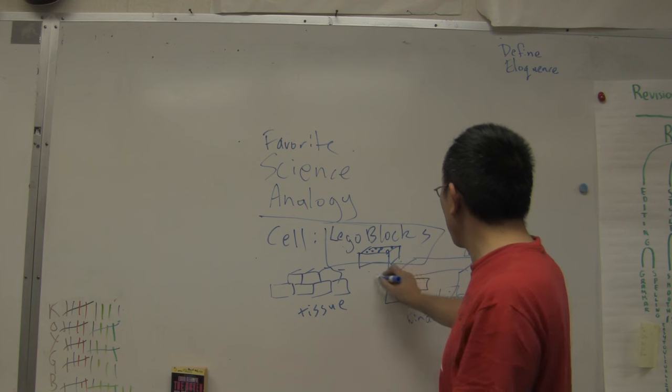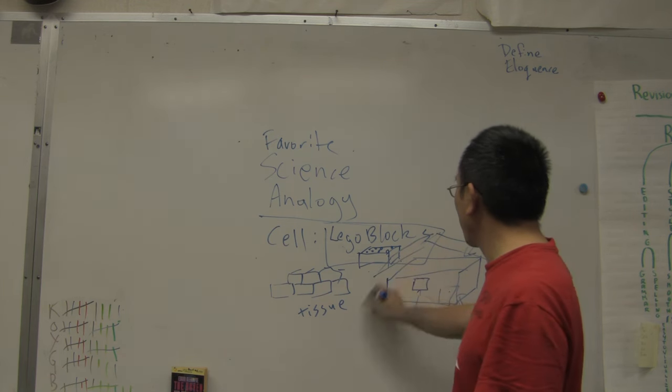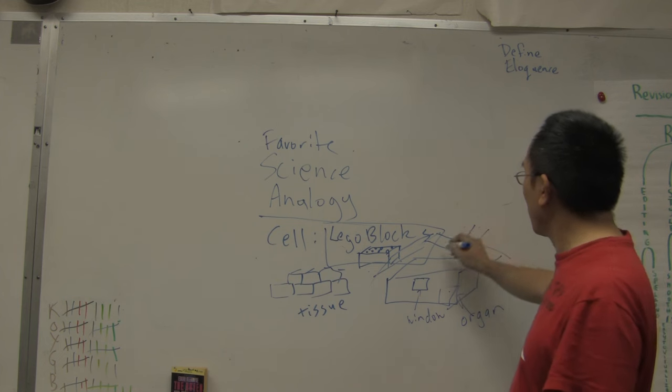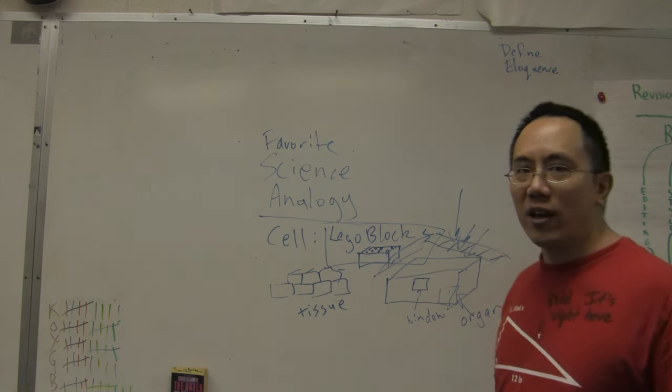This right here is a form of tissue that builds together to create an organ. Then if you have enough different types of organs, like you get roof pieces, that's a different form of cell. But these roof pieces, once you put them together, they help protect your Lego house from rain.